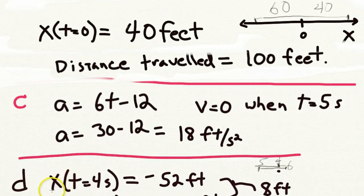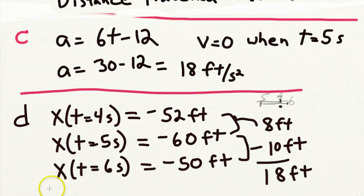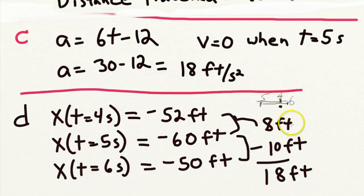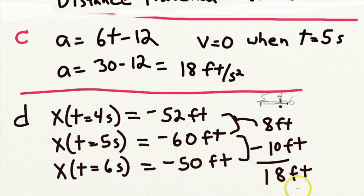Evaluating the position: at t equals four seconds it is minus 52 feet, at t equals five seconds it is minus 60 feet, and at t equals six seconds it is minus 50 feet. The difference between four and five seconds is 8 feet, and between five and six seconds is 10 feet, giving a total distance traveled of 18 feet. Although the change in position from t equals four to t equals six is only 2 feet, the total distance traveled is 18 feet.